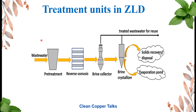In a membrane-based ZLD system using reverse osmosis, pre-treatment involves pH adjustment, softening, or other treatments to make the wastewater suitable for the membrane process. The subsequent steps are the same as in the thermal treatment process.